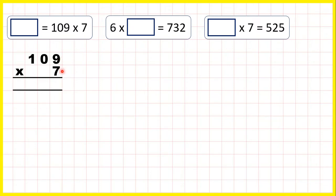9 times 7 is 63, 0 times 7 is 0, plus 6 is 6, and 1 times 7 is 7, so our answer is 763.